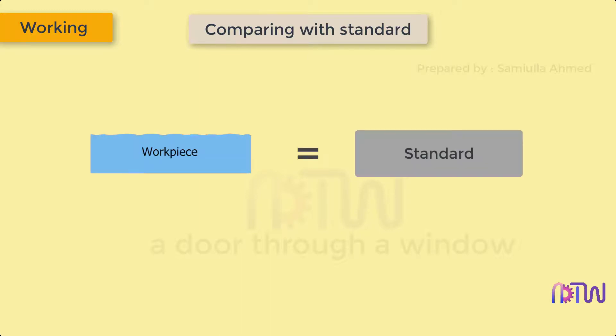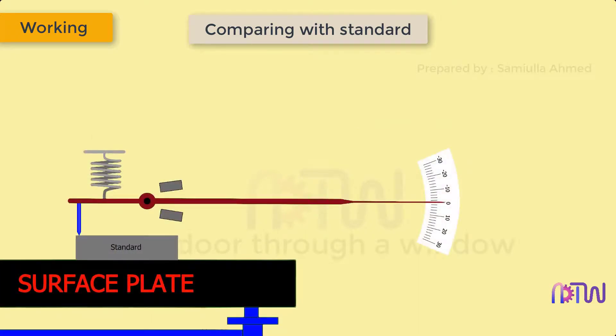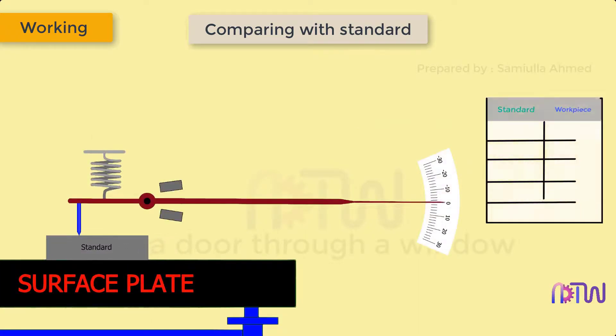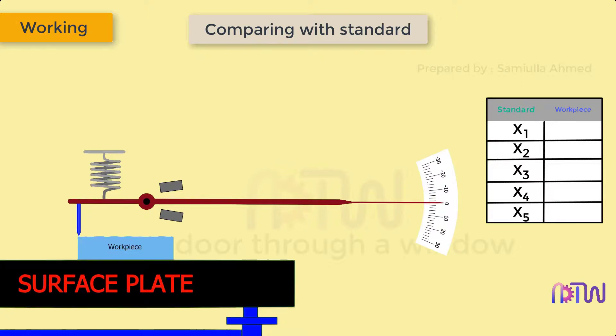In this method, a standard reference part is taken and placed below the plunger. As we slide the standard below the plunger, it will give variations on the surface. These variations are noted down. Then the standard is removed and the component to be compared is kept and made to slide below the plunger.